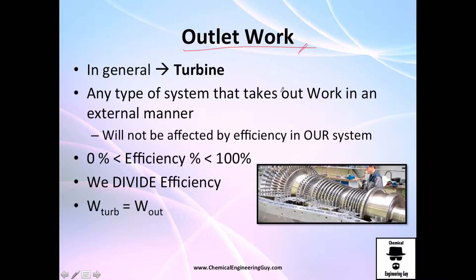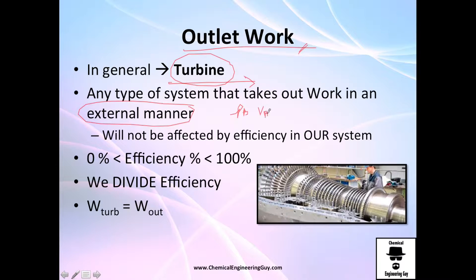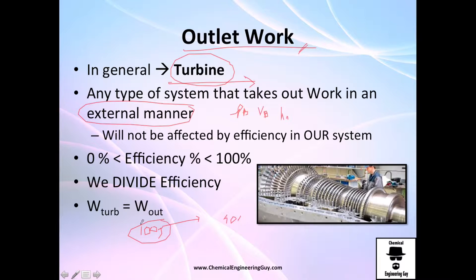Outlet work comes from turbines, windmills, water mills — devices that extract energy from the system. This is also external work. So the conditions at point B — pressure, velocity, and height — are not affected by the efficiency. If a turbine has 90% efficiency and extracts 100 joules, even though only 90% is converted to usable energy, the system is still losing 100 joules. That is what matters for our analysis.